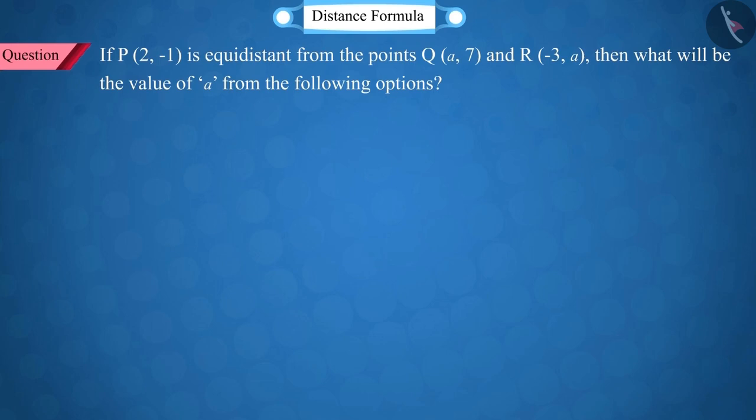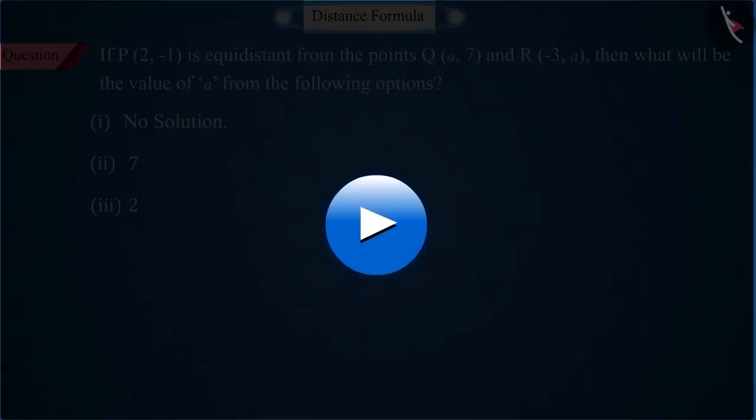If the point P is equidistant from the points Q and R, then what will be the value of A from the following options? To solve this question by the distance formula, pause the video and then match your answer.